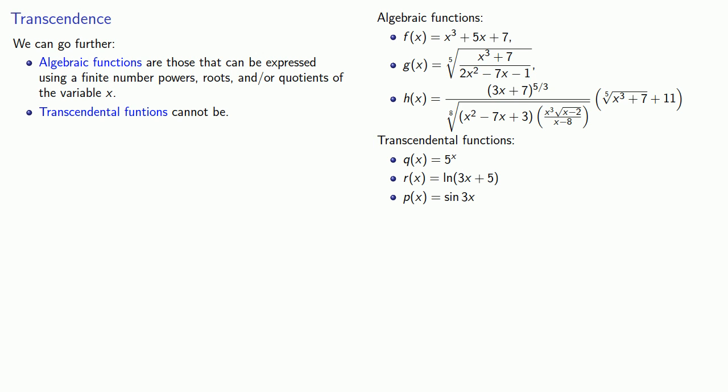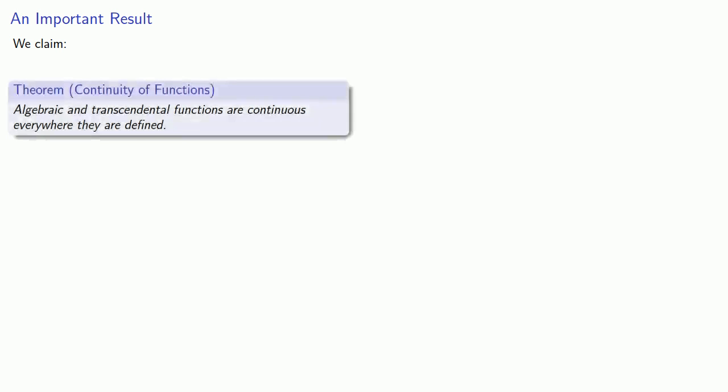And as you can probably guess from these examples, our primary transcendental functions are the exponential, logarithmic, and trigonometric functions. And rather conveniently, it turns out that what is true for algebraic functions also turns out to be true for transcendental functions. And so we have a theorem: Algebraic and transcendental functions are continuous everywhere they are defined.